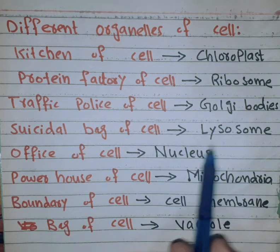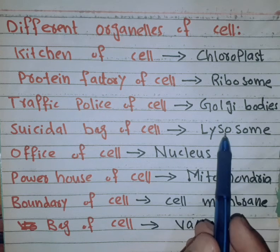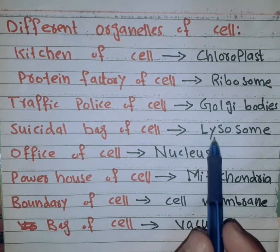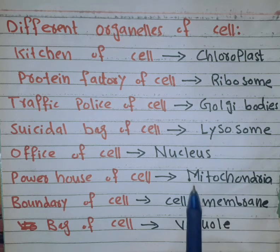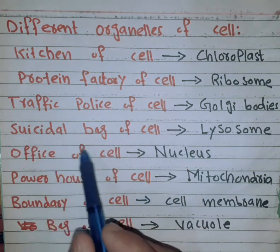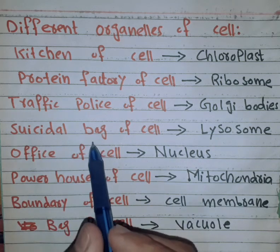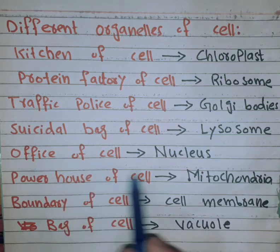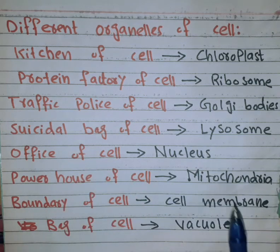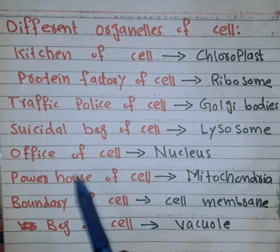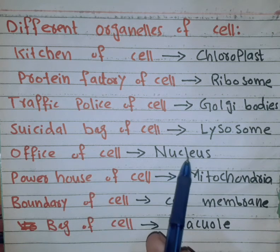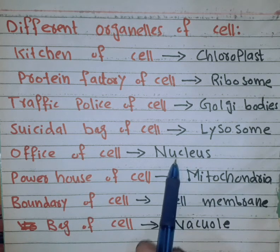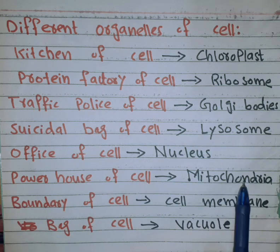The nucleus is the office of the cell, able to control all other organelles. The mitochondria is the powerhouse of the cell, controlling energy production.